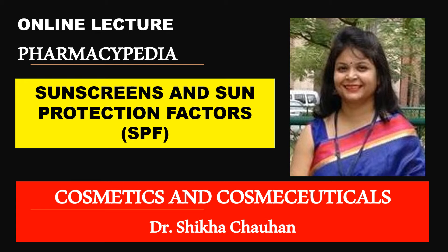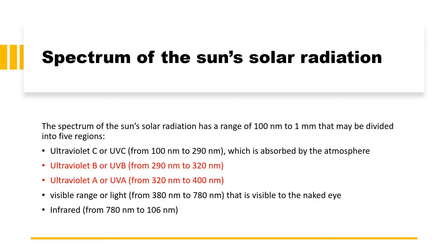Let us first try to understand the spectrum of solar radiation. The solar radiation has been divided into five major regions: ultraviolet C, ultraviolet B, ultraviolet A, visible range, and infrared range. Since we are here to discuss sunscreens, we are particularly interested in two of these ranges.